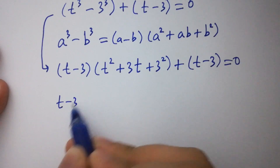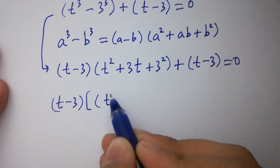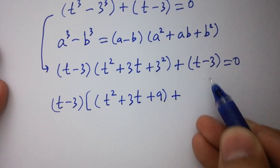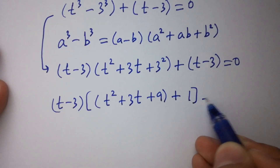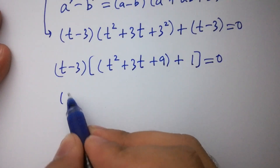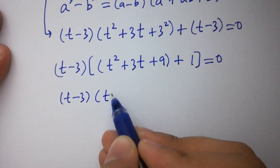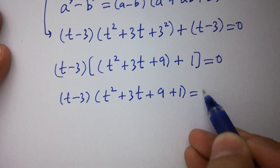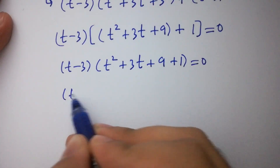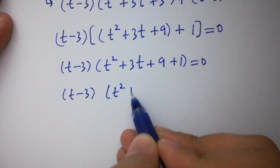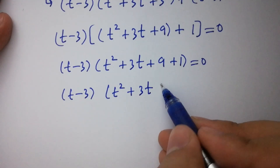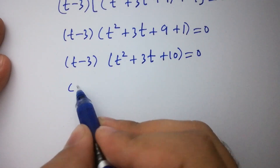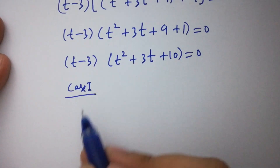Plus t minus 3 as it is, equal to 0. Here t minus 3 and t minus 3 can be taken as common, giving us t minus 3 times the quantity t square plus 3t plus 9 plus 1, equal to 0.